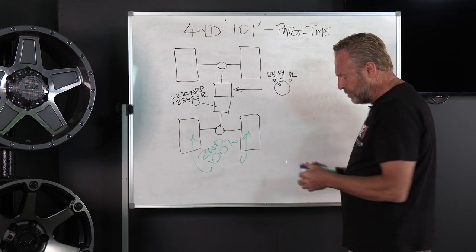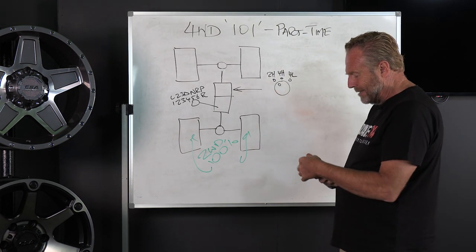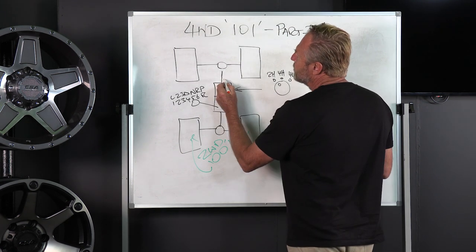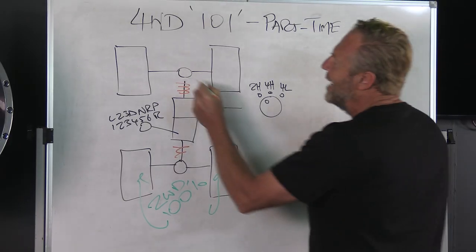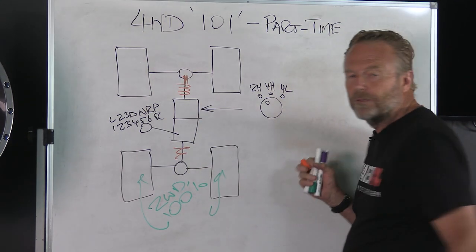Spin the dial into the 4H position and what that does is encourage this front propeller shaft to spin up to the same speed that the back one's traveling at and make a synchronized engagement with that front differential.